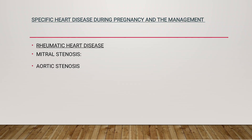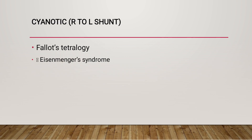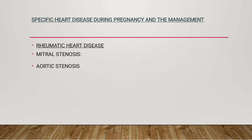Good morning all, welcome to today's video. In this class we will be dealing with specific heart diseases during pregnancy and their management. Rheumatic heart disease can be divided into mitral stenosis and aortic stenosis. Congenital heart diseases can be divided into acyanotic (left to right shunt): atrial septal defect, patent ductus arteriosus, ventricular septal defect, and mitral valve prolapse; and cyanotic (right to left shunt): tetralogy of Fallot and Eisenmenger syndrome.